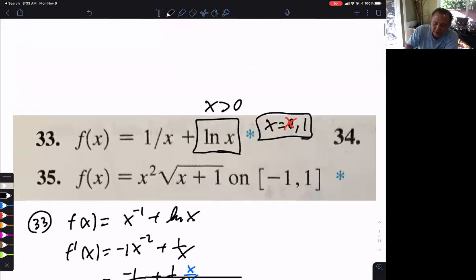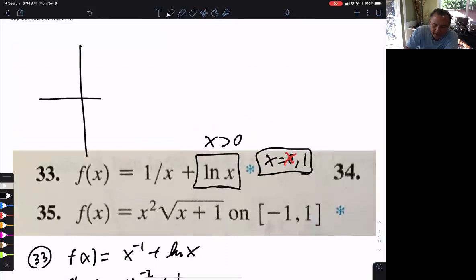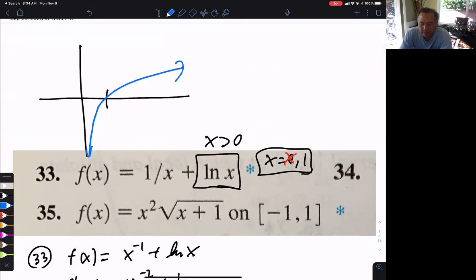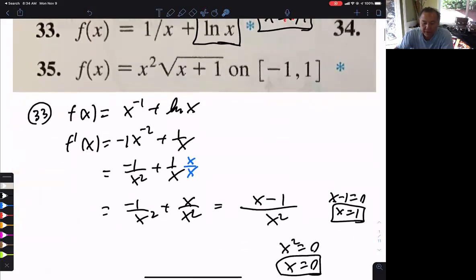Because what does a graph of ln of x look like? This is why you had to know all your graphs. And if you look at 0, right here, the function doesn't even exist. So it's not part of the domain, not part of the consideration. That's number 33.